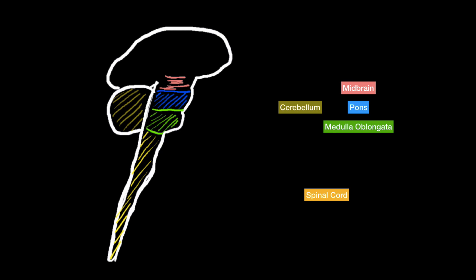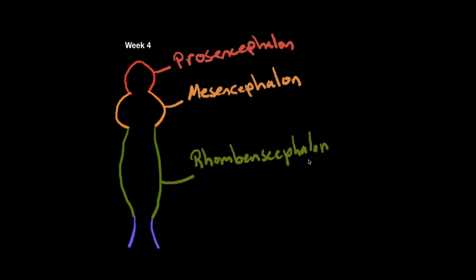Let's look at the development of the central nervous system really quick so that we understand where the different structures come from. In week four, that's how the central nervous system looks like. You're going to have the rhomboencephalon, the mesencephalon, and prosencephalon, and down here you're going to have the spinal cord.